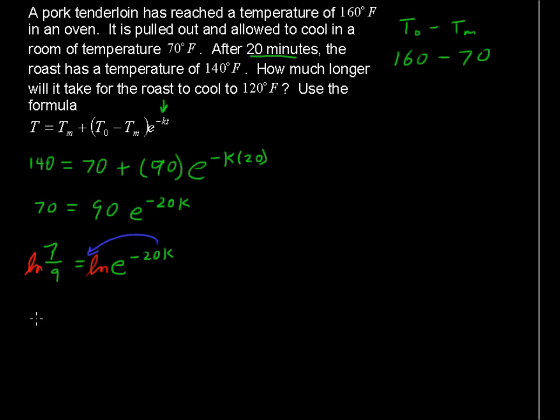So writing what we have there, we have the natural log of 7 over 9, and by the way, you could certainly evaluate this right at this point, the natural log of 7 over 9. But I'm going to leave it in there just so I don't have to mess with rounding numbers.